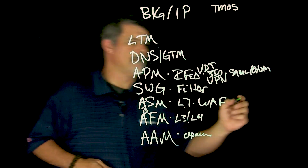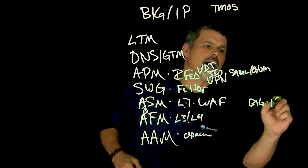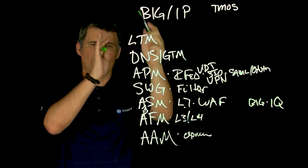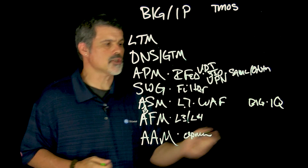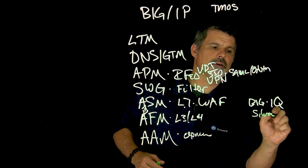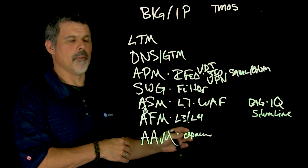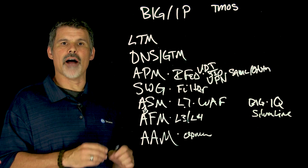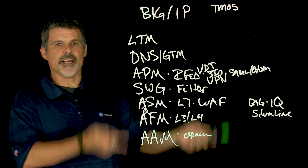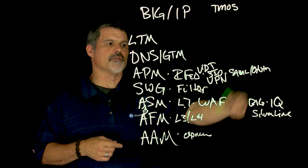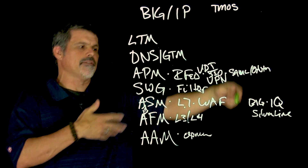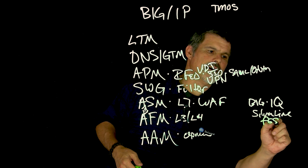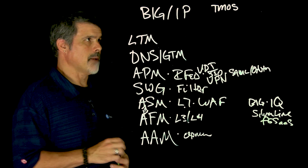You've probably also heard of Big IQ — not Big IP. Big IQ is your management solution to manage all of your Big IPs that are deployed. There's also our Silverline service, a cloud-based service to protect against things like DDoS attacks. Instead of having DDoS attacks hit your data center directly, you send traffic through the cloud to the Silverline service to scrub it of any malicious traffic before it reaches your data center. There are other F5-as-a-service type offerings out there as well.